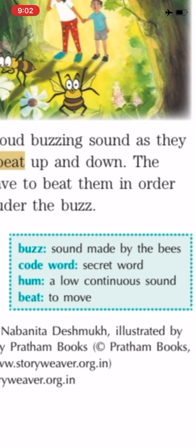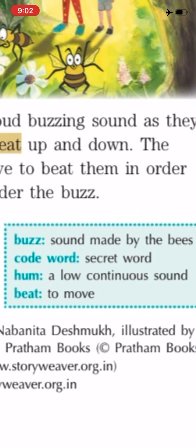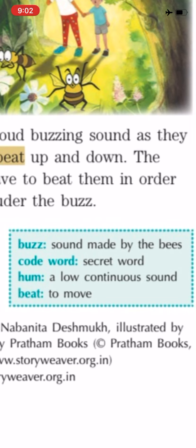Now the third word is 'hum'. Hum is a low continuous sound — धीरे धीरे जो आवाज आती रहती है, लगातार, उसको हम 'hum' बोलते हैं. जब bees buzz करती हैं तो वो zzzz sound continuously आती है — this is the buzzing sound. Next word is 'beat' — to move. जो bees हैं वो अपने wings को move करती हैं, यानि beat करती हैं. When the bees beat their wings quickly, that means they are moving their wings.